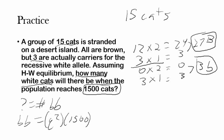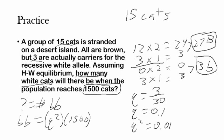We need Q squared to find the number of white cats. Q equals the total number of recessive alleles divided by the total number of alleles in the population: 3 divided by 30 (since 15 times 2 is 30), giving Q equals 0.1 or 10%. Squaring both sides, Q squared equals 0.01. Multiplying by the population of 1,500, we get 15. So the number of cats that will be white when the population reaches 1,500 is 15.